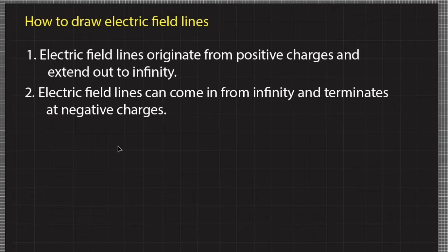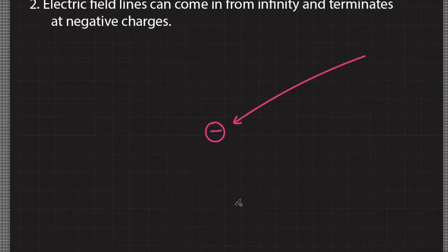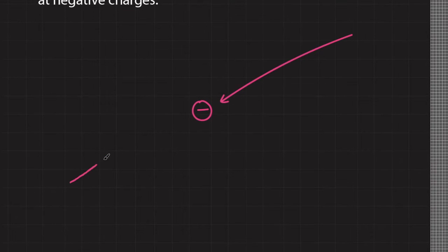Rule number two: electric field lines can come in from infinity and terminate at negative charges. For example, if you have a negative charge, electric field lines come in from infinity from anywhere and terminate at the negative charge.